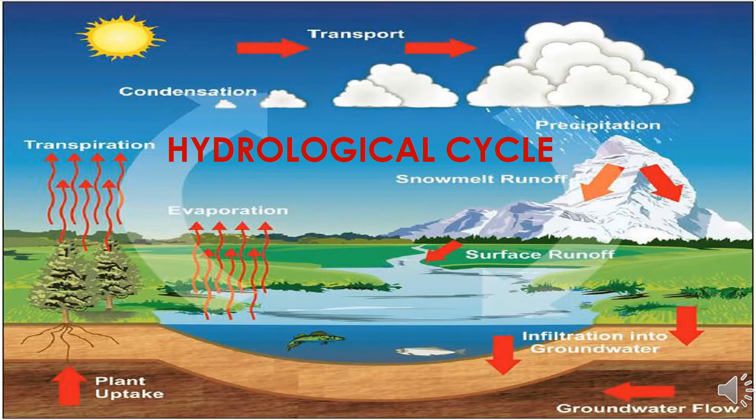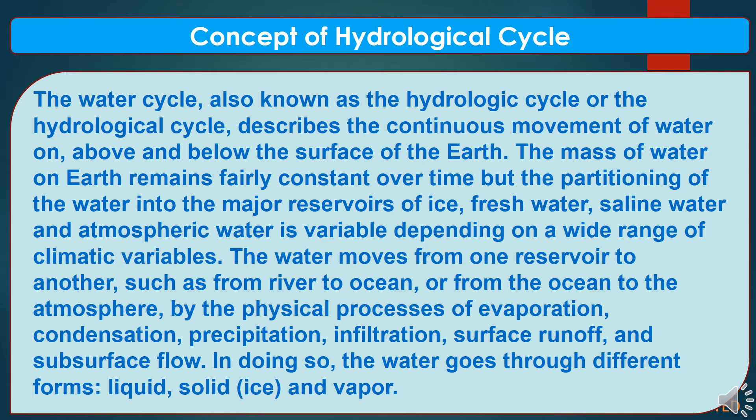There are a lot of processes which are combined with the Hydrological Cycle, about which we will discuss in this chapter. The water cycle, also known as the hydrologic cycle or hydrological cycle, describes the continuous movement of water on, above, and below the surface of the earth. The mass of water on earth remains fairly constant over time, but the partitioning of the water into the major reservoirs of ice, fresh water, saline water, and atmospheric water is variable depending on a wide range of climatic variables.